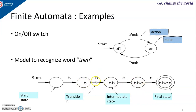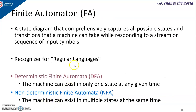From T, after receiving H, I change the state to TH — this we call a transition function. A finite automaton is a state diagram that comprehensively captures all possible states and transitions that a machine can take while responding to a stream or sequence of input symbols. This finite automaton is a recognizer for regular languages, which can be recognized using either deterministic finite automata (DFA) or non-deterministic finite automata (NFA). In a DFA, the machine can exist in only one state at any given time.